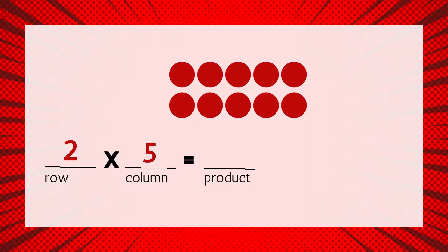Now we can simply count the circles to find the product. Let's count by 5s: 5, 10. There are 10 circles in all, so our product will be 10. Two times five equals ten.